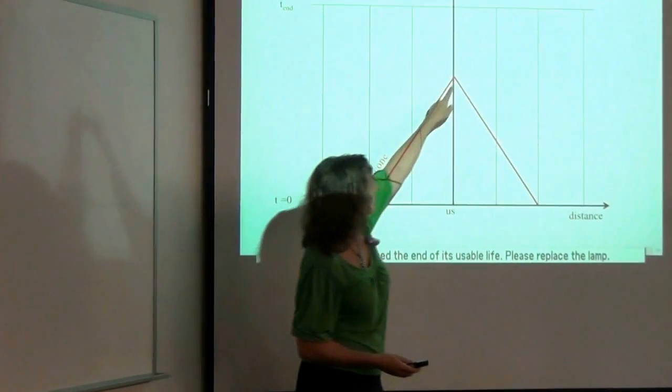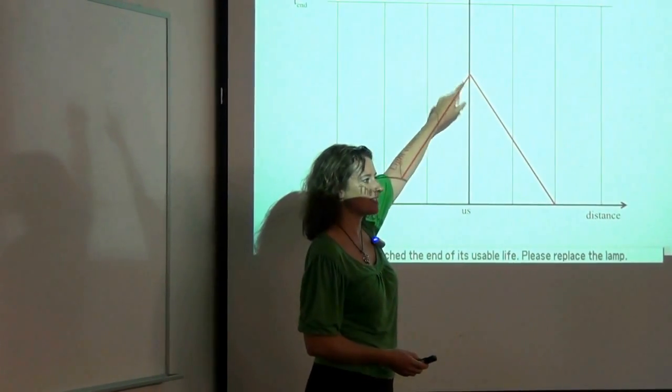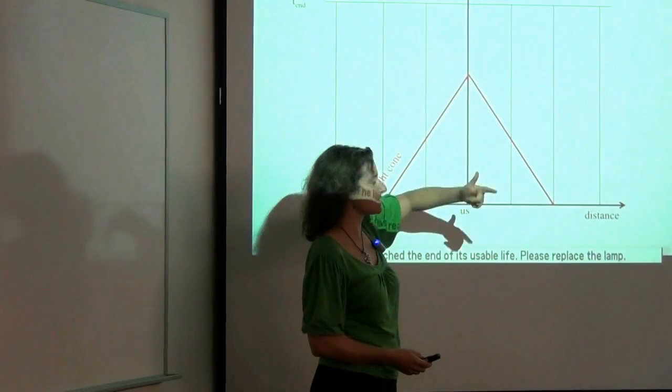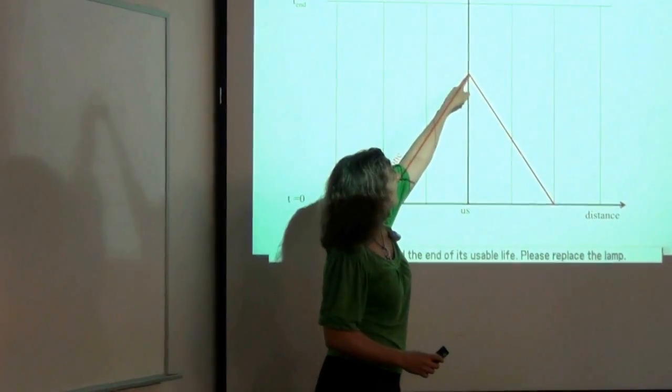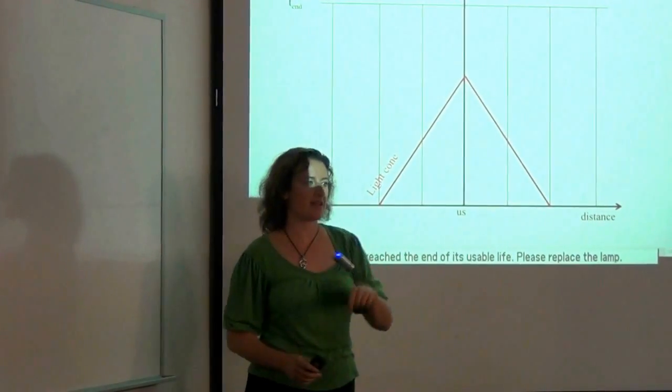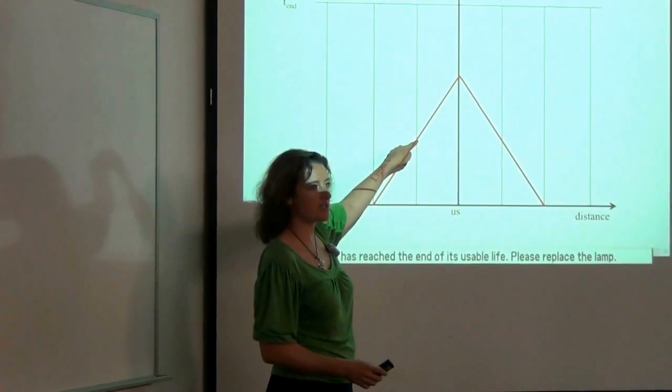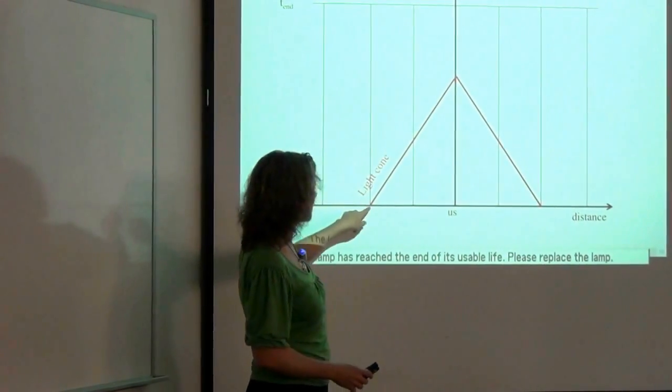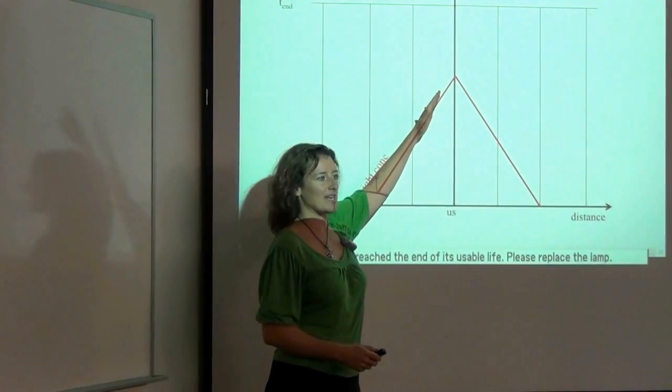So this is us now. So every point on this diagram is an event, a position in space and time. So this is our current event right now, blink. And so the past light cone is everything that we can see right now. So we're seeing this galaxy as it was at that point in time. We're seeing this galaxy at the very, very beginning of the universe. So this is what we can see right now.